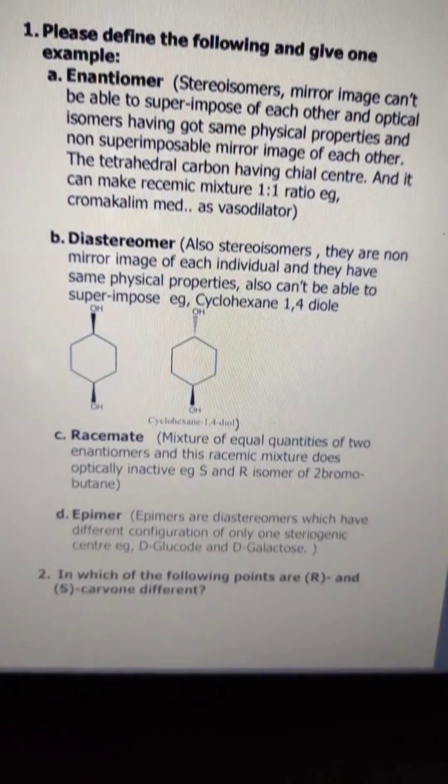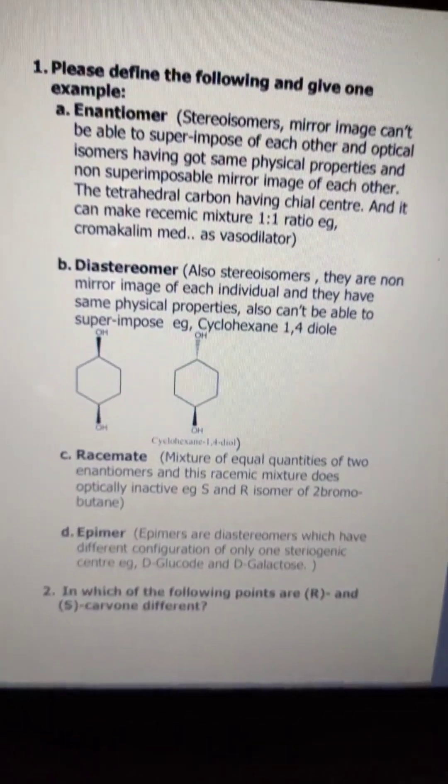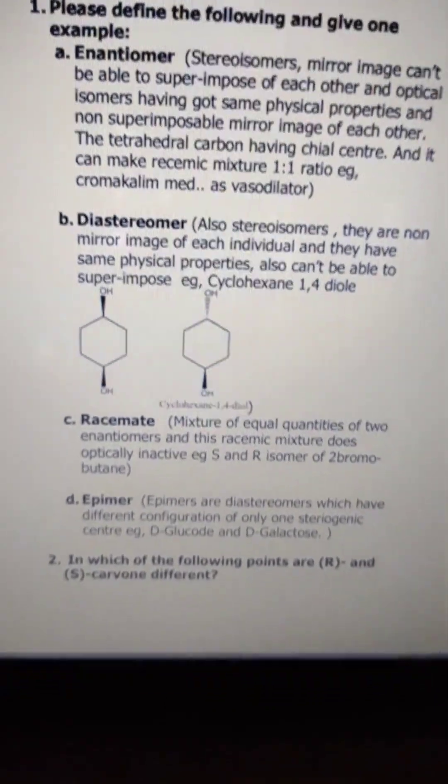And the R and S isomers can form from bromobutane.